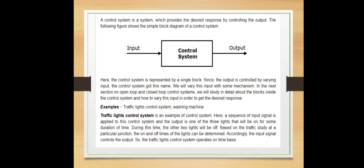We will vary this input with some mechanism. These mechanisms are open loop and closed loop control systems. For example, traffic light control system, washing machine - these are some of the systems where control system works. Let us see the example of traffic light control system.